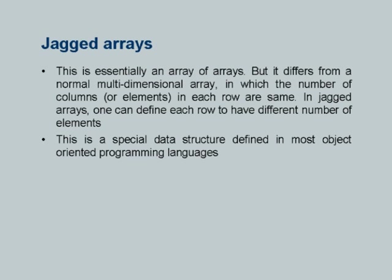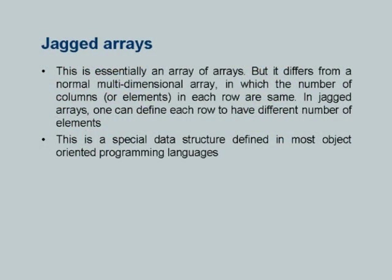There is also a question about jagged arrays. A jagged array is essentially an array of arrays, but it differs from a normal multidimensional array in which the number of columns in each row is the same. In jagged arrays, each row can have a different number of elements, and rows have elements that are arrays themselves.